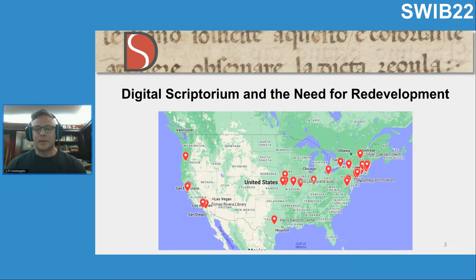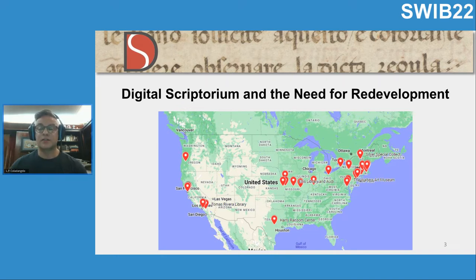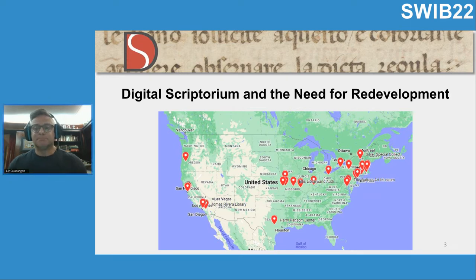At some point in the past few years, there was a need to redevelop, and part of that redevelopment was really modernizing the national union catalog to focus more on how the metadata would be structured to be optimized for a linked data environment.